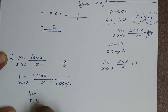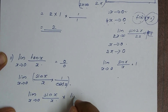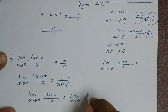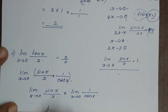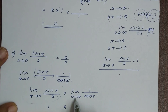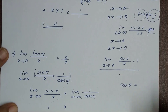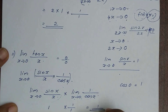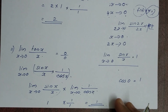We write limit x tends to 0, sin x by x into limit x tends to 0, 1 by cos x. The first part equals 1. For the second part, x tends to 0, cos 0 equals 1, so 1 by 1 equals 1. Therefore 1 into 1 equals 1, so the answer is 1.